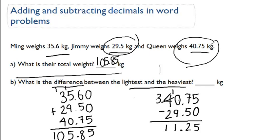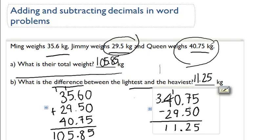3 minus 2 is 1. Your final answer, the difference between the heaviest and the lightest person is 11.25 kilograms. Whew, that was a lot of work. Good job.